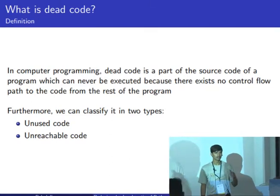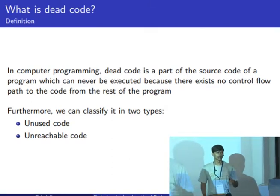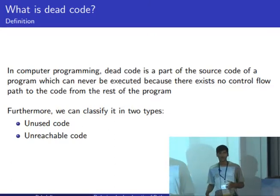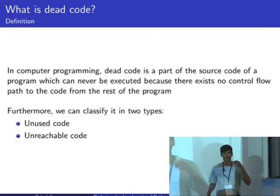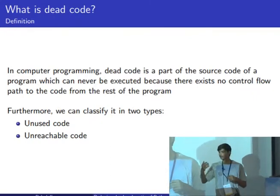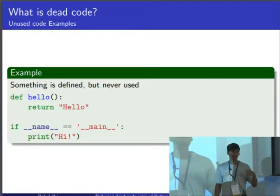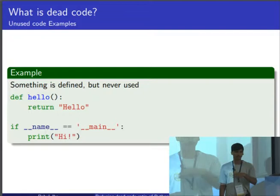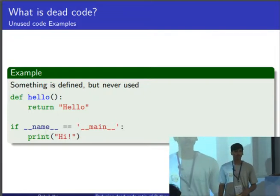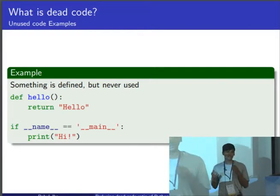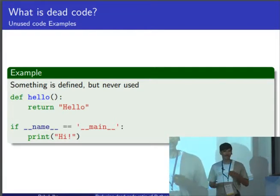Dead code is something which never lies in the control flow of Python programs. So if you have a program which has a variable which you write to, but you never read from, it is an example of dead code. For example, you define a function named hello, and it does something, but you never actually use it in the control flow of your program — you never actually call the function. So it is an example of dead code, and it needs to be removed because of various reasons.